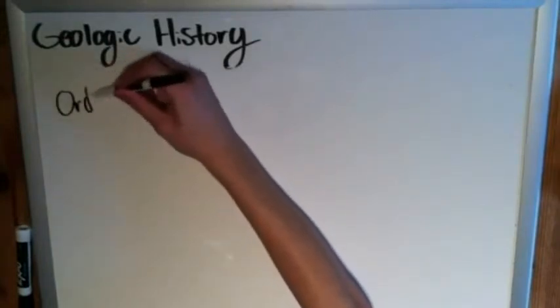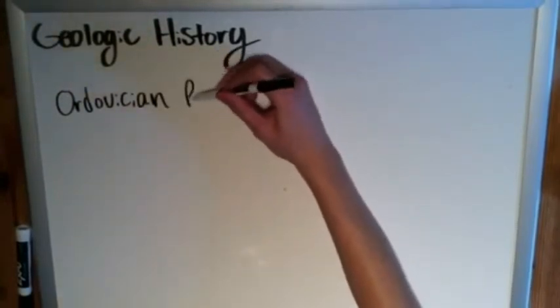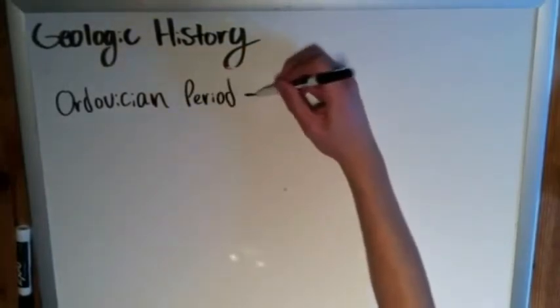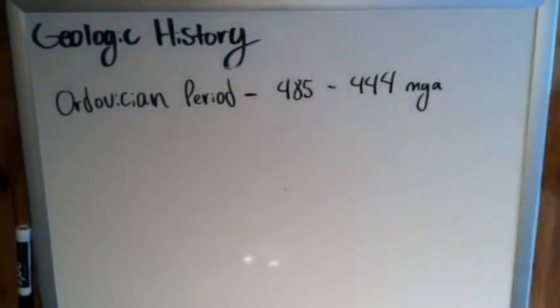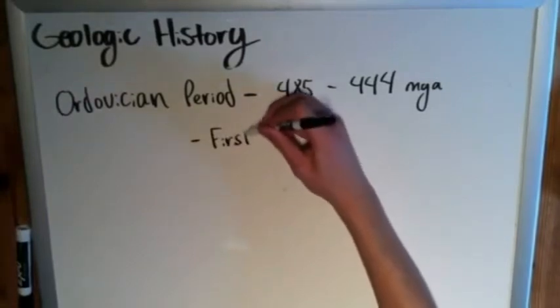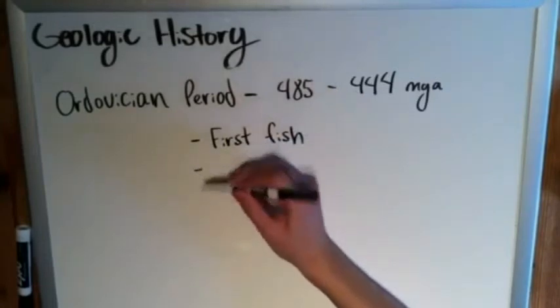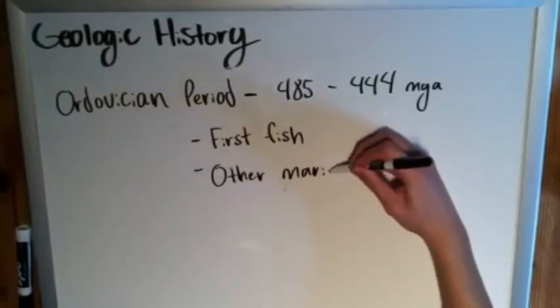Following the Cambrian period, we have the Ordovician — a pretty fun word to say. This is a period, not an eon, between 485 and 444 million years ago. It's generally known for the first actual fish and other marine invertebrates.